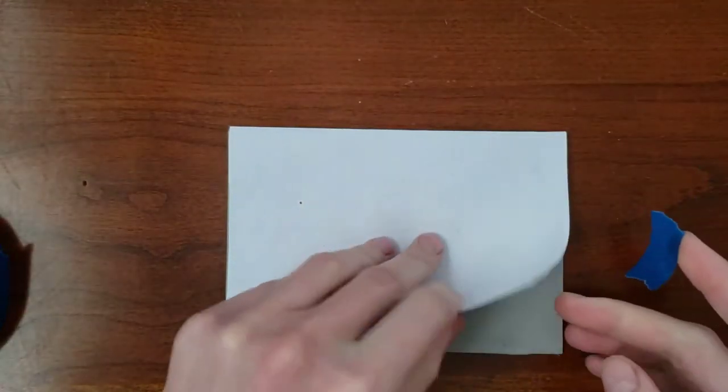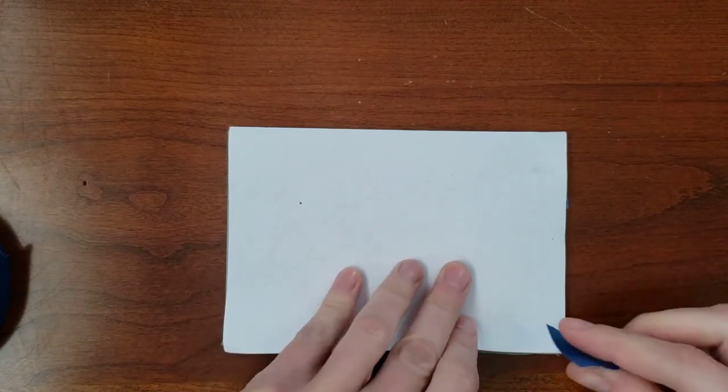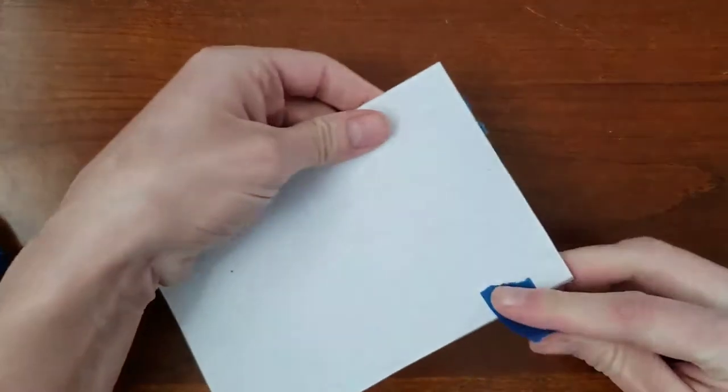The type of tape doesn't matter so long as it stays put. Tape the bottom of the drawing as well. It's very important that the paper doesn't shift during this process. Any buckling will mess up the transfer.